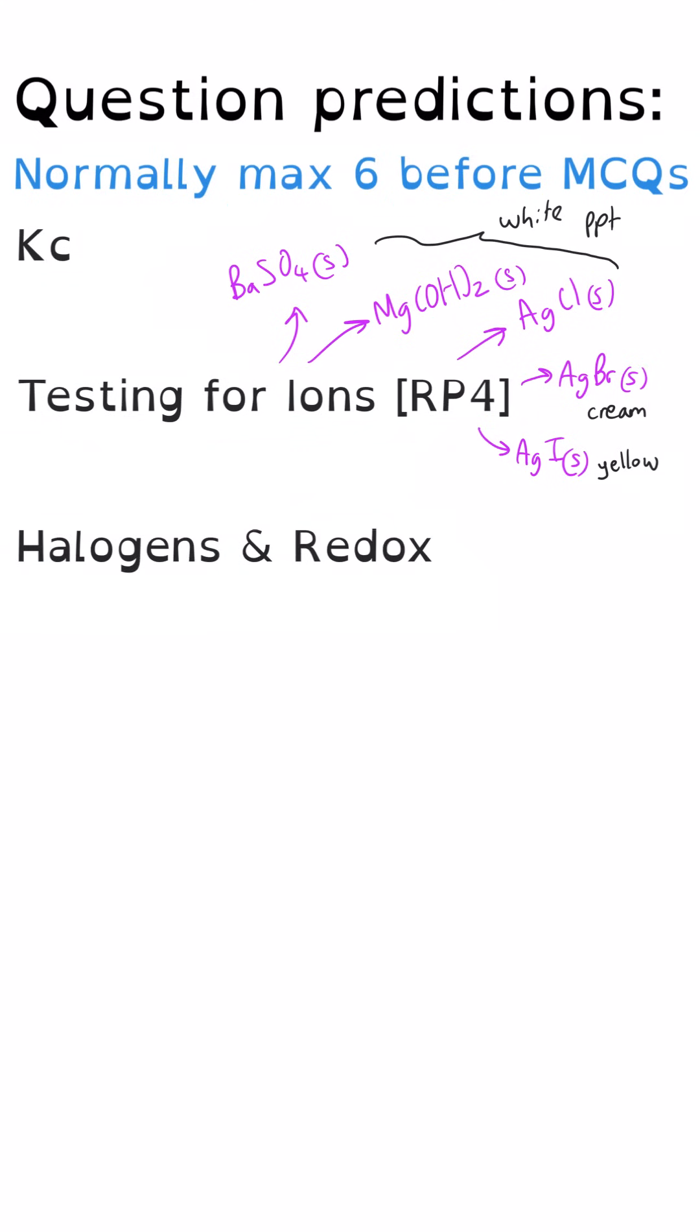My next choice for something that could come up is the testing for ions required practical. Probably only a short question, five or six marks, but there's not been anything about barium sulfates, white precipitate, magnesium hydroxide or silver nitrate and all those associated chemical tests. Also, there's been nothing really to do with the halogens. This is really easy to weave it together with the redox topic, particularly with the sodium halide solid reacting with the concentrated sulfuric acid, proving the reducing ability of those different halide ions.